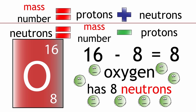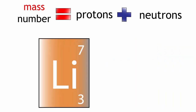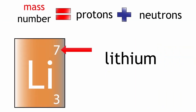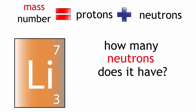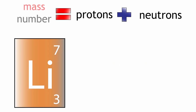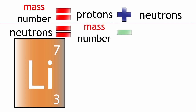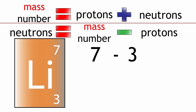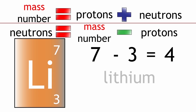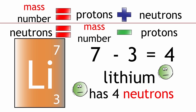Let's take another example. Lithium has a mass number of 7 and has 3 protons. How many neutrons does it have? Mass number equals protons plus neutrons. We can rearrange this to show that neutrons equals mass number minus protons. Neutrons equals 7 minus 3 equals 4. Lithium therefore has 4 neutrons.